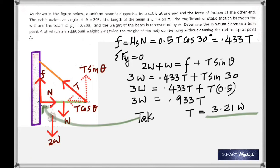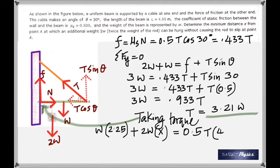So taking the torque about the point, you get W times 2.25 plus 2W times x, which we are trying to find, should be equal to T sin 30, which is 0.5 T times 4.50.